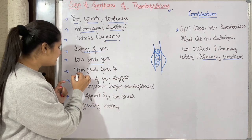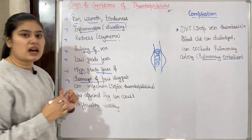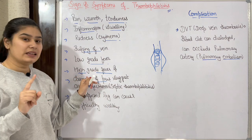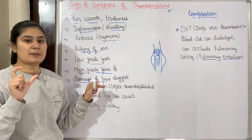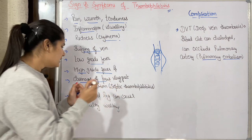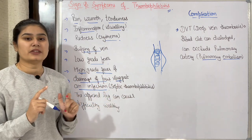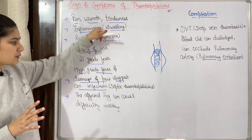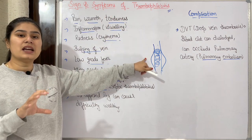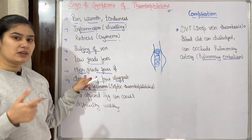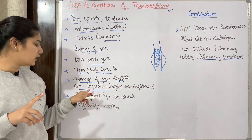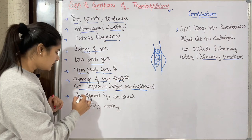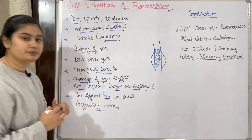The vein will bulge and be full. The patient can feel a low grade fever. However, if there is high grade fever and drainage of pus — pus formation — this indicates infection. When there is infection, there will be high grade fever and pus formation, which we call septic thrombophlebitis — 'septic' meaning infection.